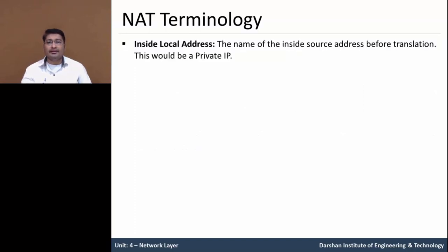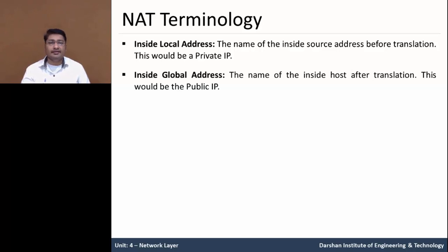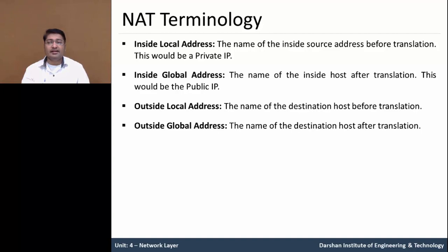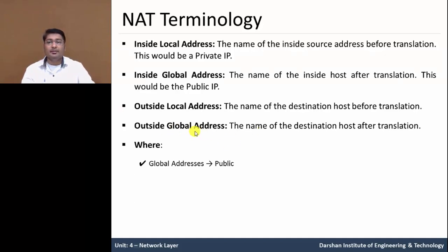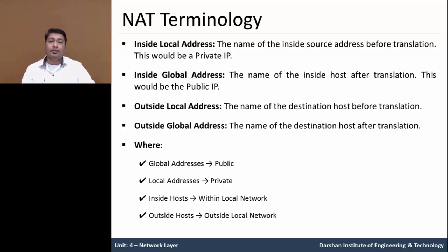Let us understand a few NAT terms. The first is inside local address — the name of the inside source address before translation, meaning it is the private IP address of our network. The second is inside global address — the name of the inside host after translation, meaning it is known as a public IP address. The next is outside local address — the name of the destination host before translation. Outside global address is the destination host after translation. So: global address means public, local address means private, inside host means within the local network, and outside host means outside the local network.